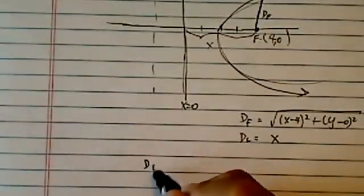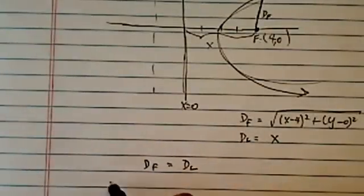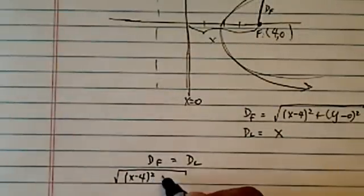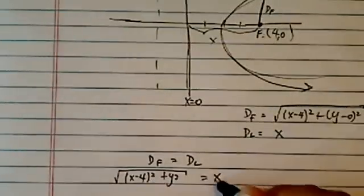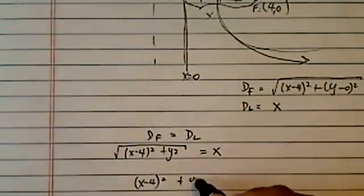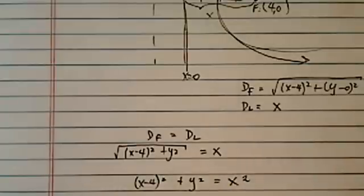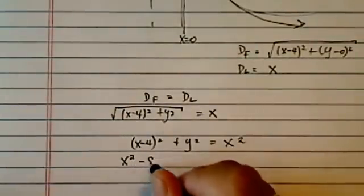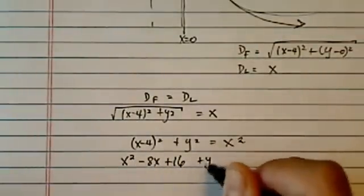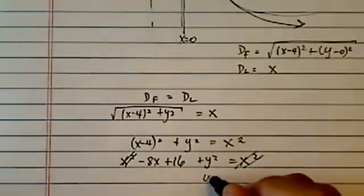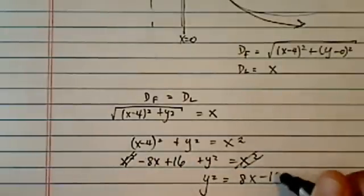And now all we have to do is just set those two equal to each other. And then we're going to have an equation coming out, and that's what we're looking for. So sqrt((x-4)² + y²) = x. Let's square on both sides, (x-4)² + y² = x². Collect and gather terms and clean it up. So x² - 8x + 16 + y² = x². x² cancels out, and then we have y² = 8x - 16.